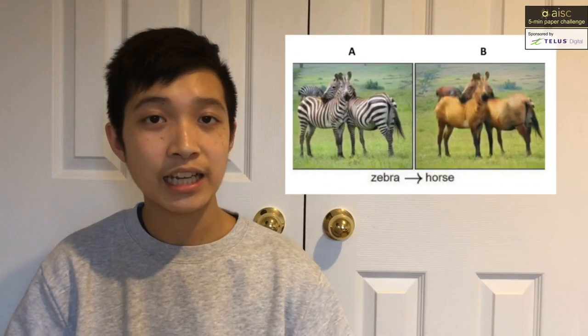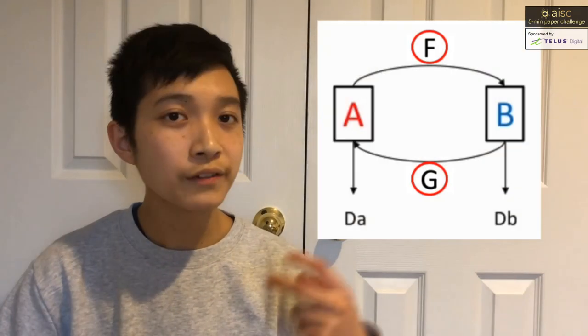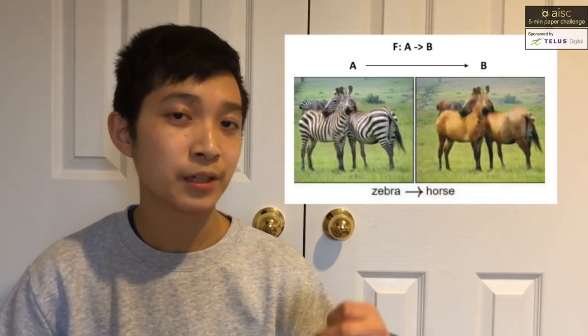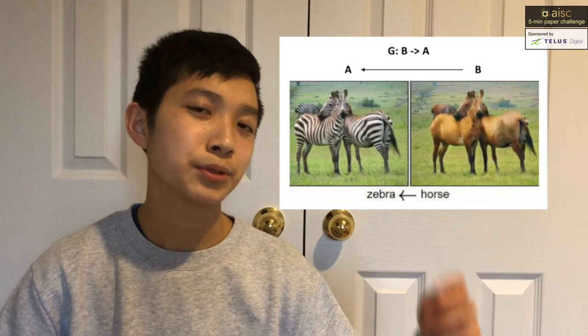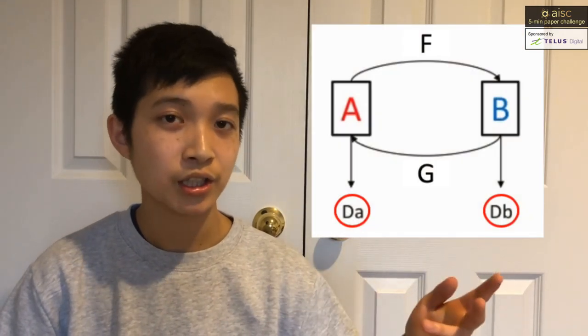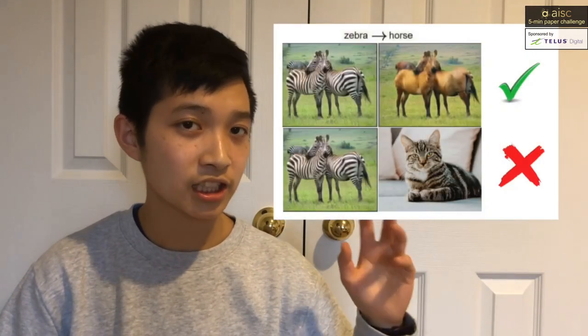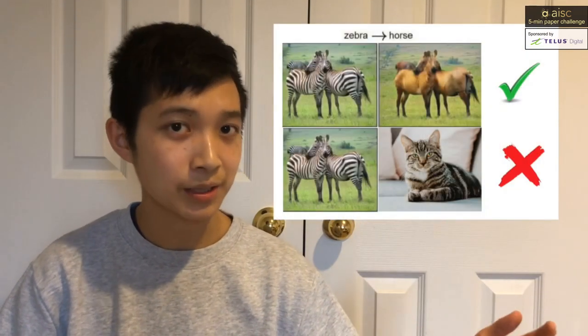Let's say we want to map an image from domain A to domain B — say from zebras to horses. We'll have two generators, one for each domain: one called F, which maps from domain A to domain B, and the other, G, which maps from domain B to domain A. We'll have two discriminators, one for each domain, which basically ensures that the generated images are actually part of the domain they're supposed to be in.